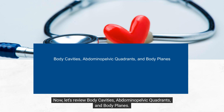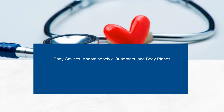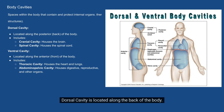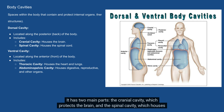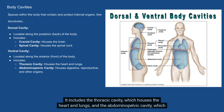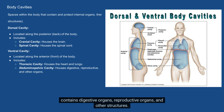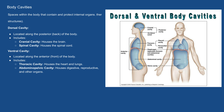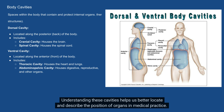Now let's review body cavities, abdominal pelvic quadrants, and body planes. Body cavities are spaces within the body that house and protect our internal organs. The dorsal cavity is located along the back of the body and has two main parts: the cranial cavity, which protects the brain, and the spinal cavity, which houses the spinal cord. The ventral cavity is located along the front of the body. It includes the thoracic cavity, which houses the heart and lungs, and the abdominal pelvic cavity, which contains digestive organs, reproductive organs, and other structures. Body cavities play a vital role in protecting internal organs and providing them space to function properly.